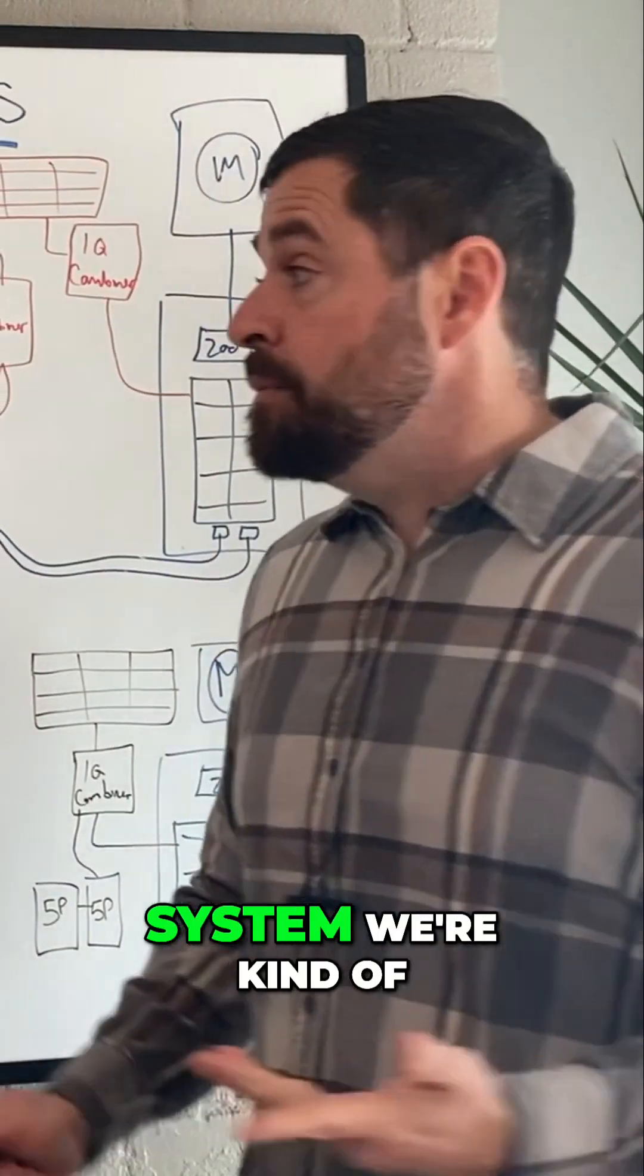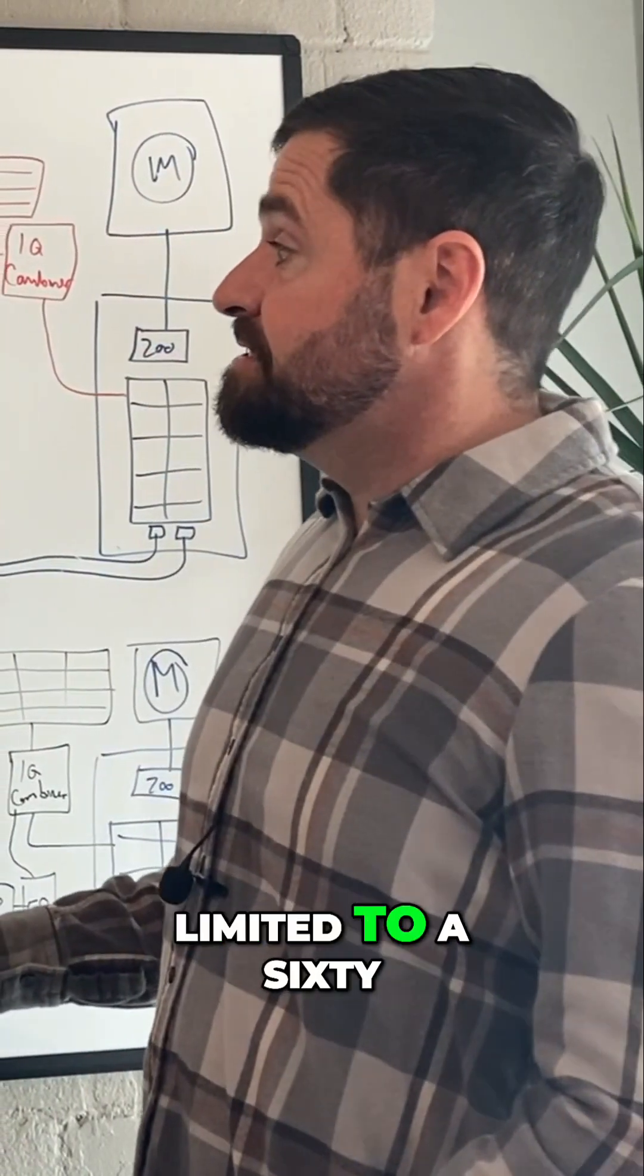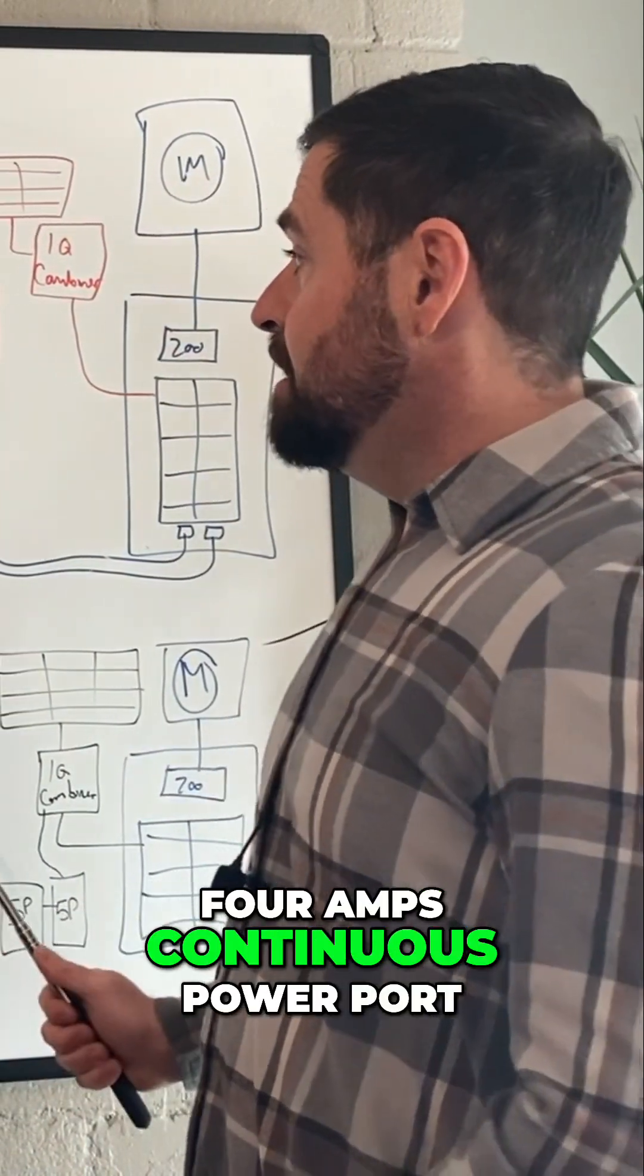With the Enphase system, we're limited to 64 amps continuous on the power port.